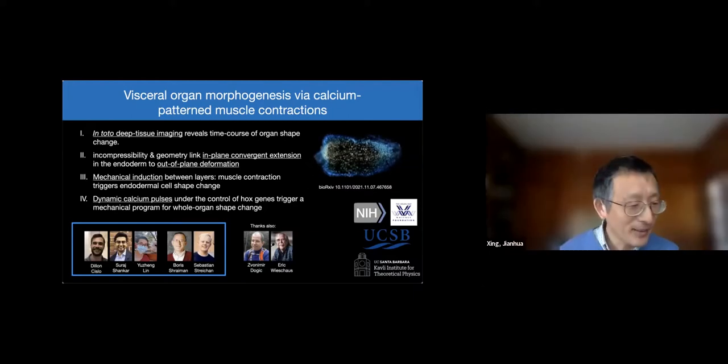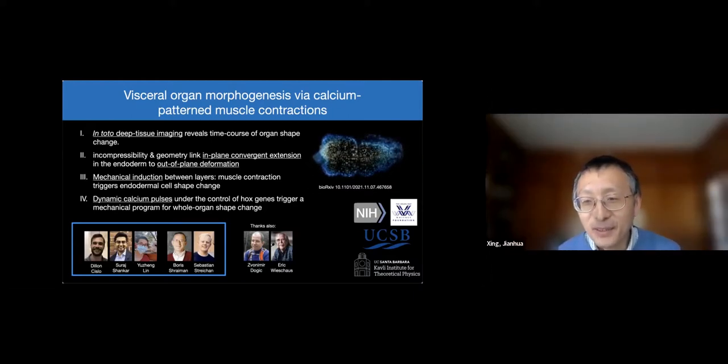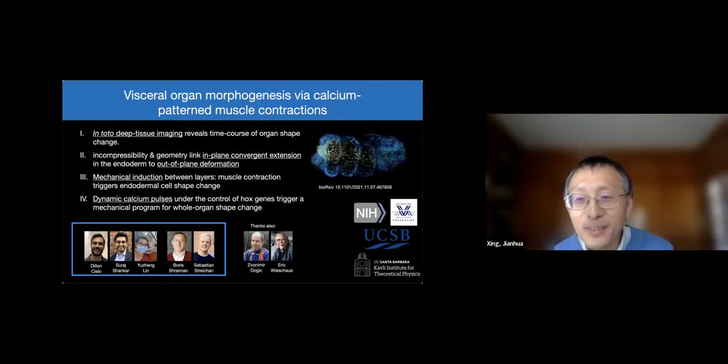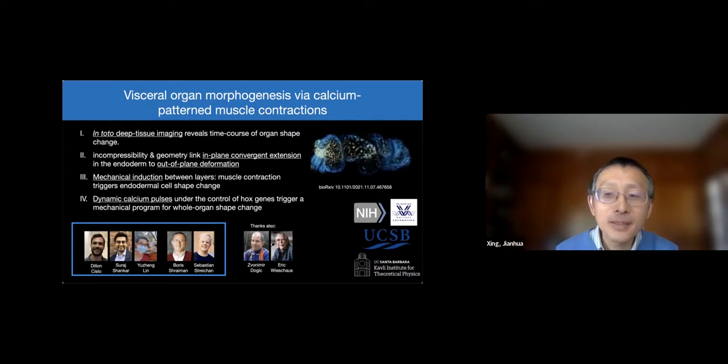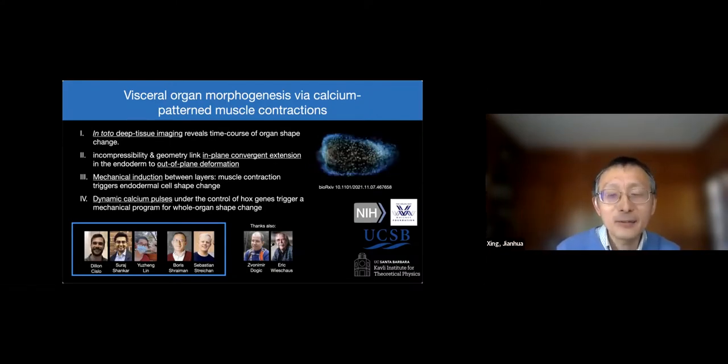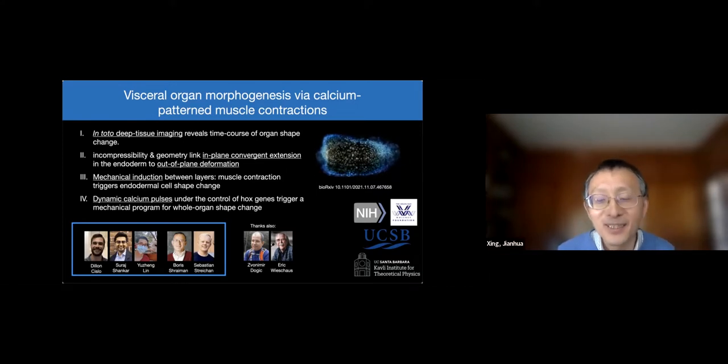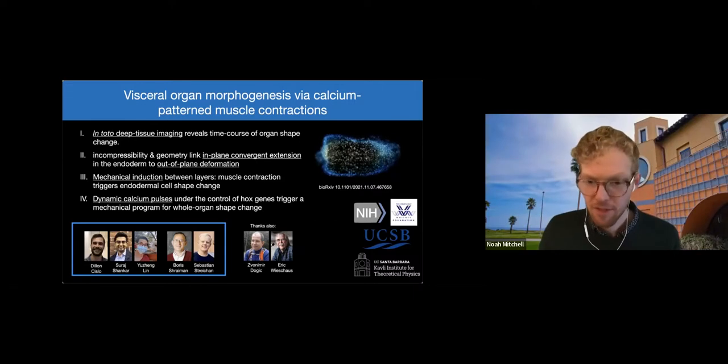Okay, Noya. Thanks for the nice talk and also for the good timing. So there are two questions already here of three now. The first one, Jonathan asks you, do you think you might make predictions of new organ shapes by changing the initial topology from cylinder, say, to toroidal shape?